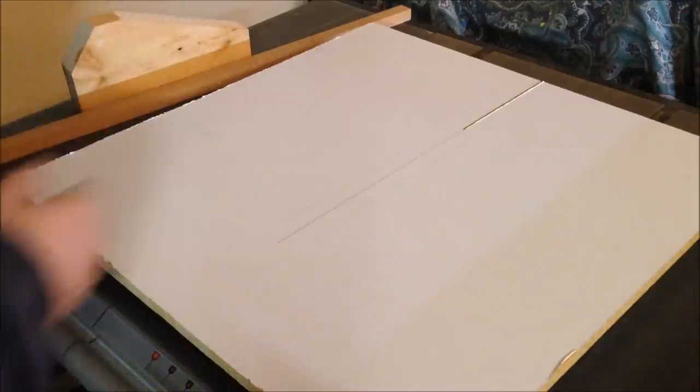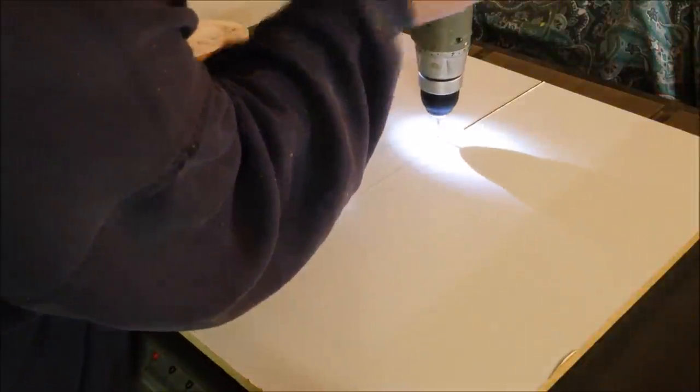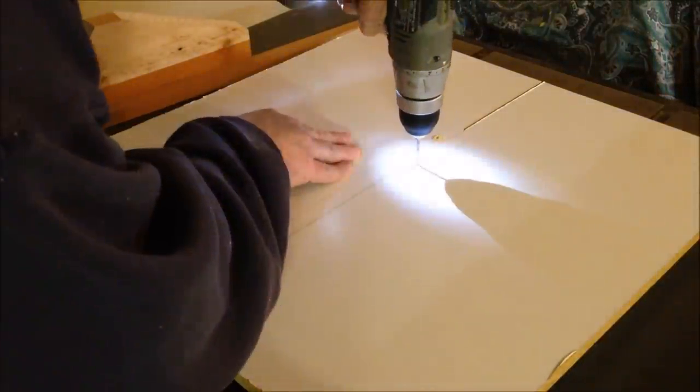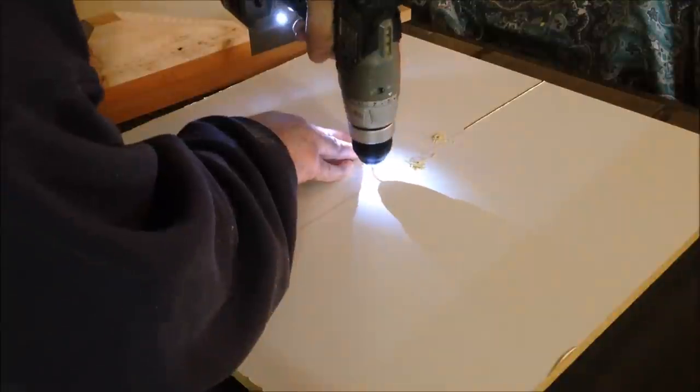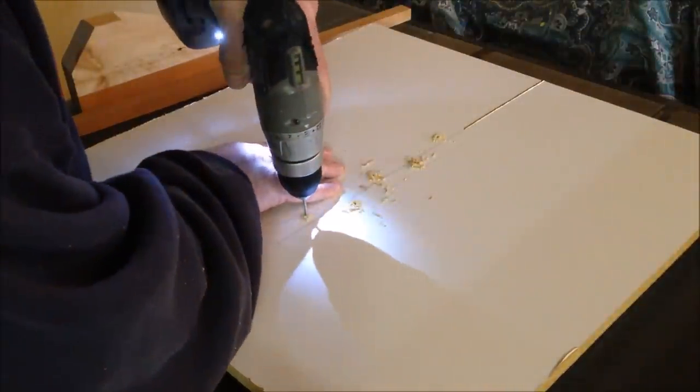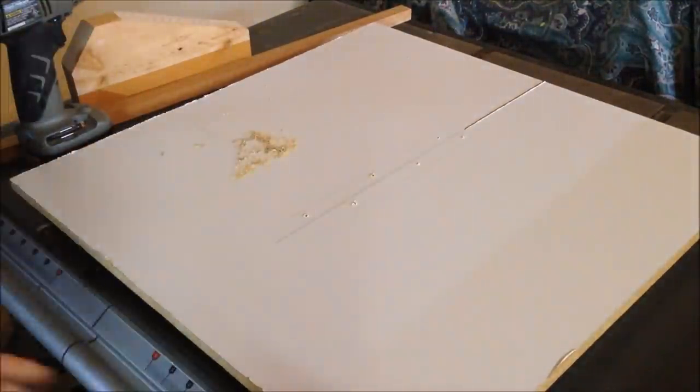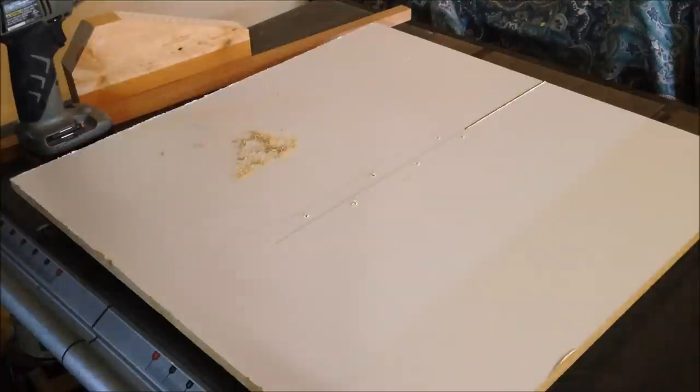I've got the sled up off the table and I've got a couple of sacrificial pieces of wood below it so that I don't damage my table and I'm just going to take my drill and put six holes in this sled. Now I'm just going to flip the sled over and countersink the holes from the bottom and then I will attach the push block to the top of the sled.